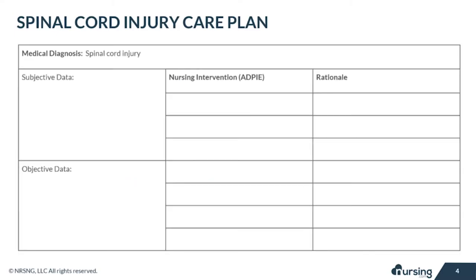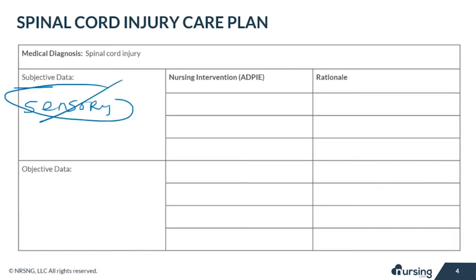Let's take a look at some of the subjective data that your patient with a spinal cord injury may present with. Remember, subjective data are things based on your patient's opinions or feelings. These things might include loss of sensory function below the level of the injury. Also, autonomic dysreflexia symptoms — which are common with spinal cord injuries — include blurry vision, feeling hot, and being restless or anxious.